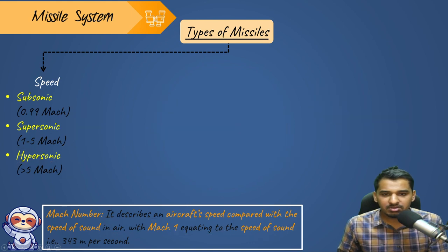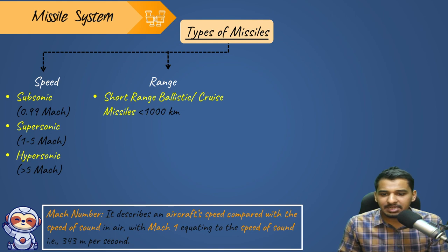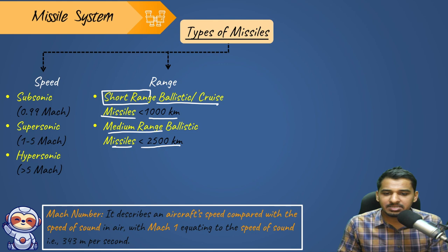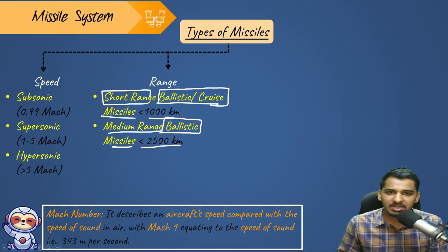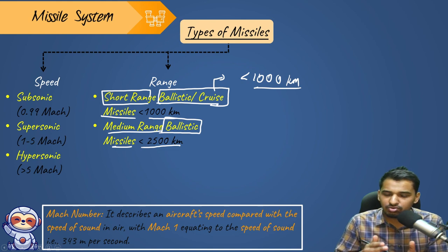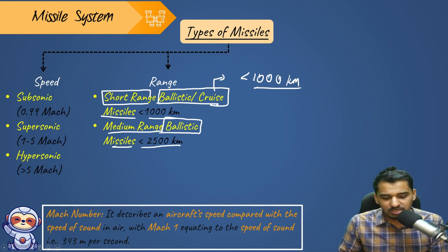The second classification is based on range. Range less than 1000 km gives us short range missiles — these can be ballistic as well as cruise missiles. Medium range ballistic missiles are less than 2500 km. From medium range onwards, we generally have ballistic missiles, because cruise missiles are generally less than 1000 km in range. It is very hard to manufacture a cruise missile with a range of more than 1000 km, so cruise missiles are generally short range.